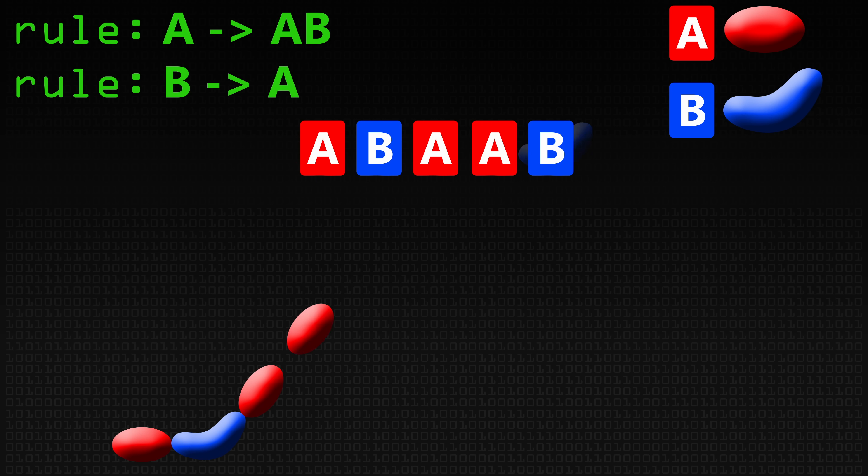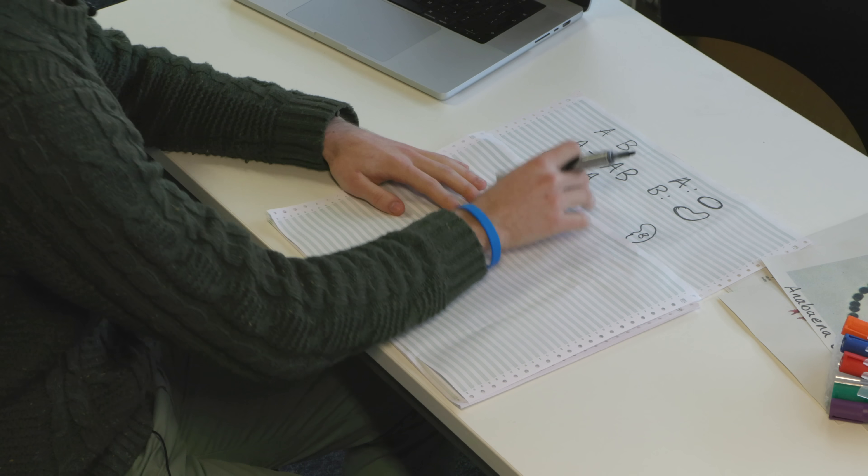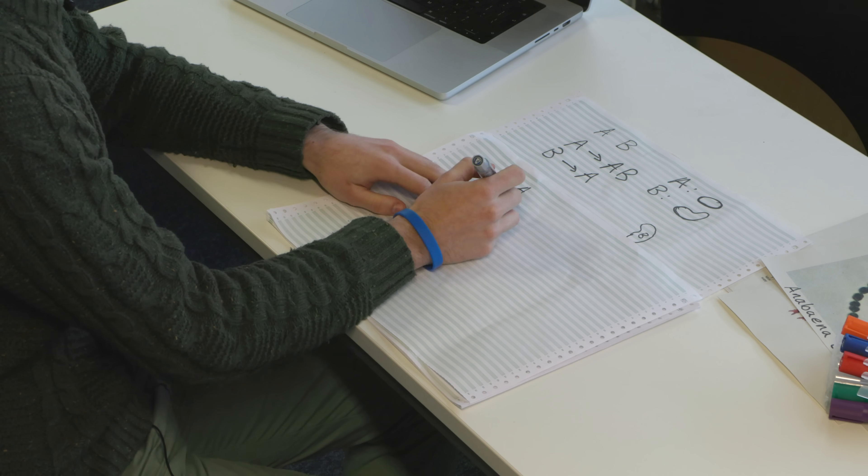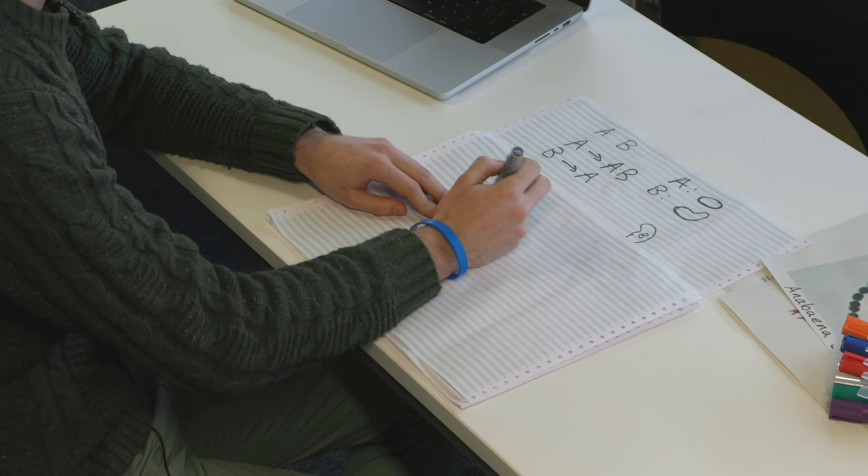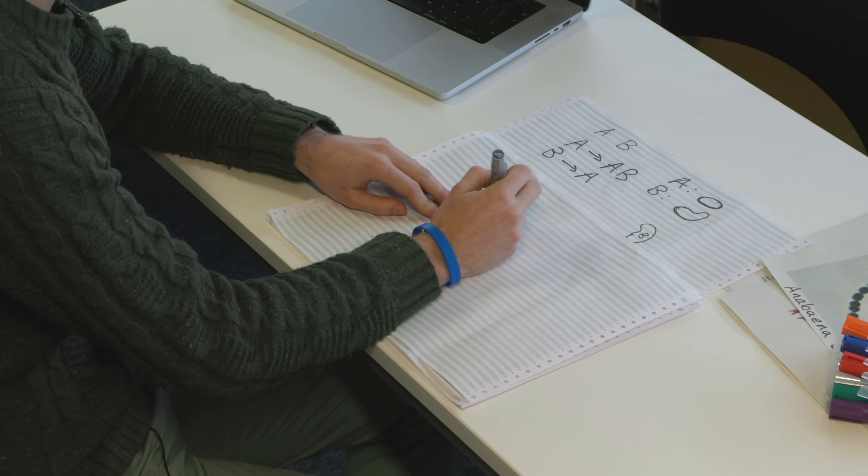This is unremarkable in itself, but the interesting part comes when we start applying these rules. We can start from like a seed organism, like say maybe the egg or something, and we're just going to start with an A here, and then we want to apply these rules. So for each symbol in our organism, we replace it with what the rules tell us to, so in this case we just get an AB.